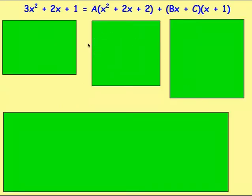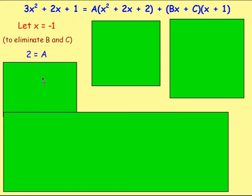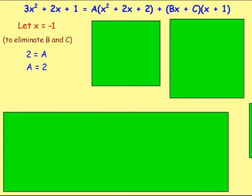Now we need to choose values of x to find a, b, and c. We've got (x + 1) in the expression, so if x = −1, that bracket becomes 0, eliminating b and c and allowing us to find a. Let x = −1: the left side gives 3(−1)² + 2(−1) + 1 = 2. On the right, (−1 + 1) = 0, so the (Bx + C) term disappears, leaving 1 × A. Therefore a = 2.